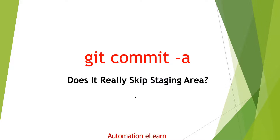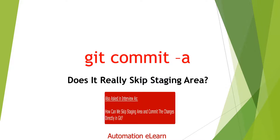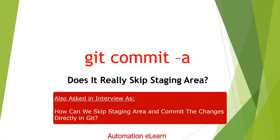Hey guys, welcome back to Automation Elon. I'm your friend Suresh Dubey, and in this video I'm going to discuss a very interesting concept related to the git commit command when we use it with the -a flag. This topic is important because if you search for it on the internet, everywhere it says that git commit with -a flag will skip the git staging area and directly perform a commit operation.